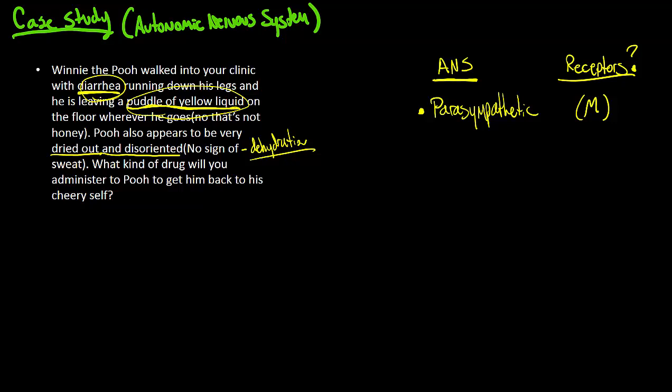Winnie the Pooh here probably has some kind of acetylcholine problem or some other problem with his parasympathetic nervous system. The point is here is that you want to ramp up the sympathetic nervous system or you want to downregulate or shut down the parasympathetic nervous system.